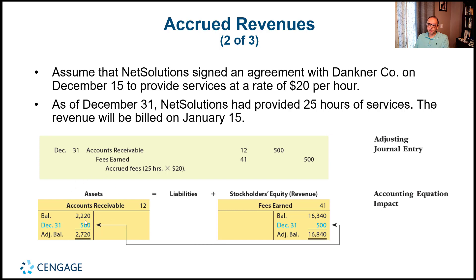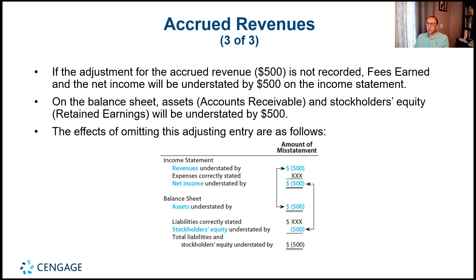Looking at the accounting equation: under assets, accounts receivable increases by $500; under revenues — which positively impacts stockholders' equity — we credit $500. One account is debited and the other credited. Remember, adjusting entries never involve cash.